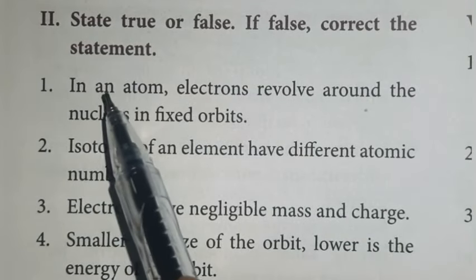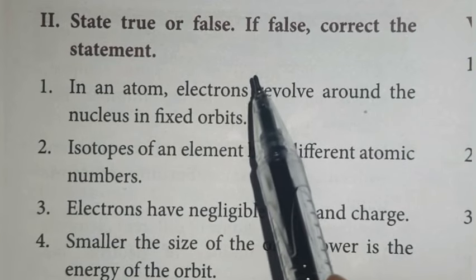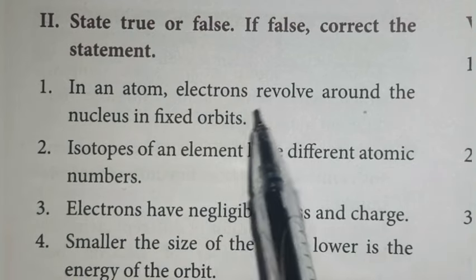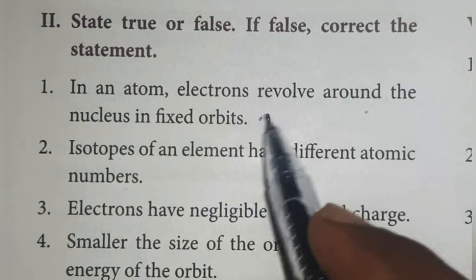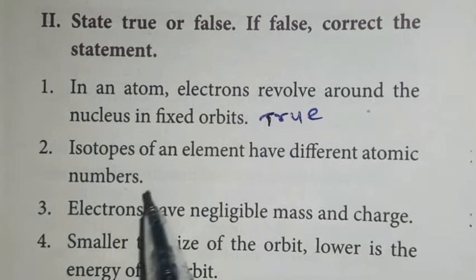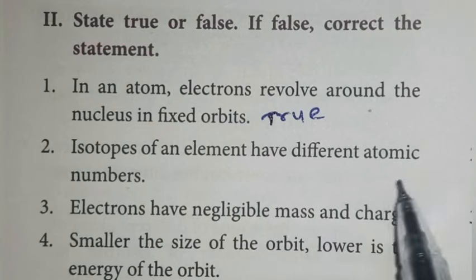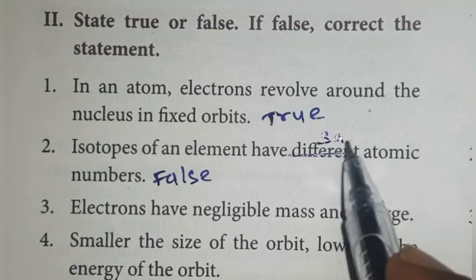Part 2: state true or false. If false, correct the statement. First one: in an atom, electrons revolve around the nucleus in fixed orbits. True. Second one: isotopes of an element have different atomic numbers. False. Same atomic numbers.